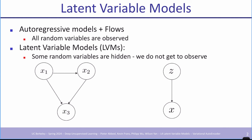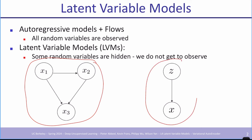Autoregressive models looked like the model on the left. Latent variable models will look like this. Flow models looked a bit like this too, but in flow models z stayed in the same dimensionality as x, which limited what it could do. Here we won't be making that assumption, and there will be other important differences.